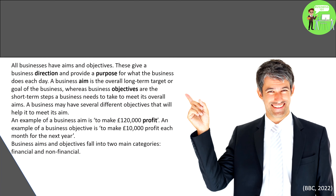A business aim is the overall long-term target or goal of the business, whereas the business objectives are the short-term steps a business needs to take to meet its overall aims. A business may have several different objectives that will help it to meet its aim. An example of a business aim is to make £120,000 in profit, and an example of a business objective is to make £10,000 profit each month for the next year.